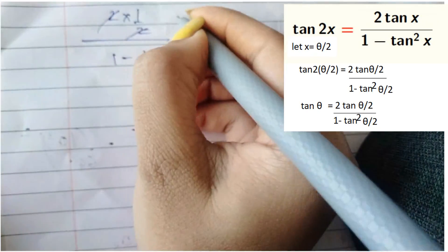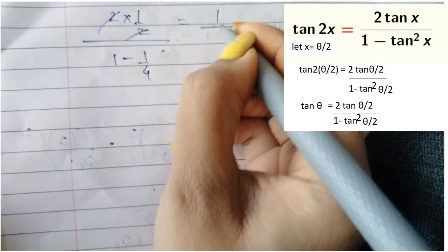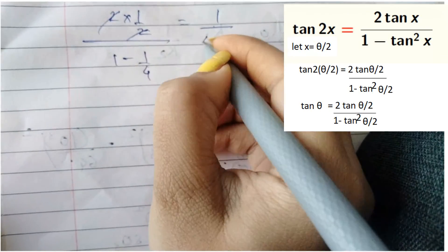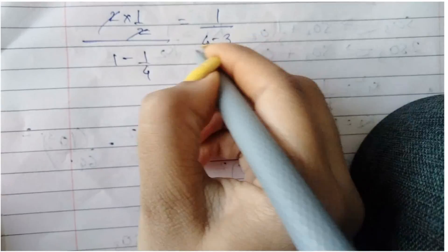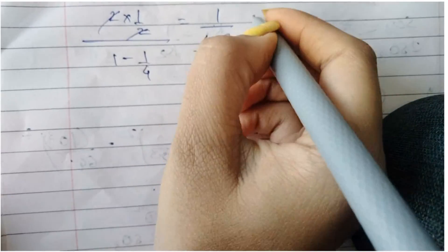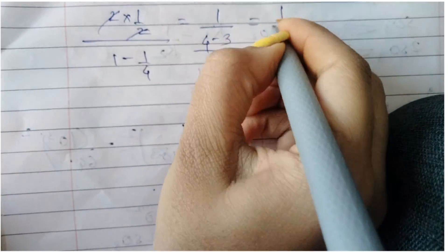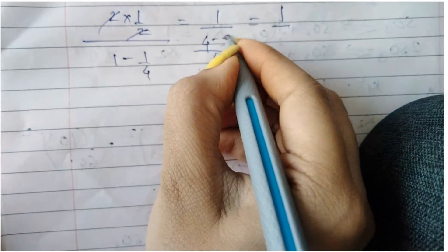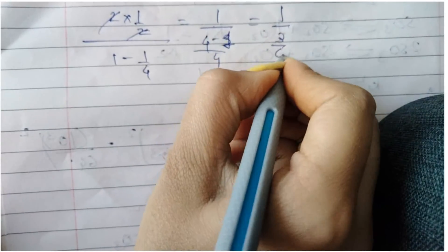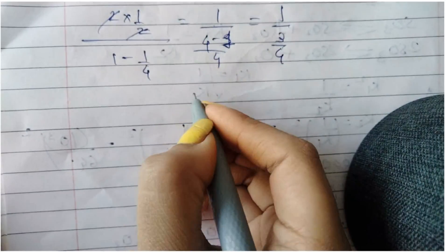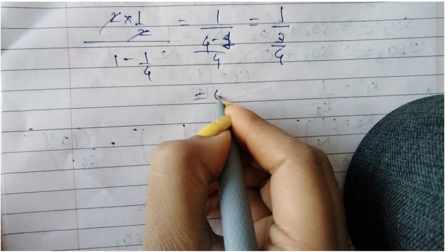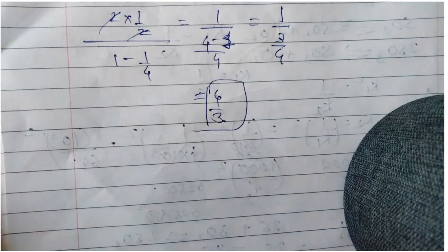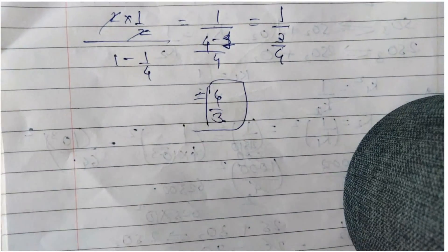Taking LCM: 1 / ((4 - 1)/4) = 1 / (3/4) = 4/3. So the answer is 4/3.